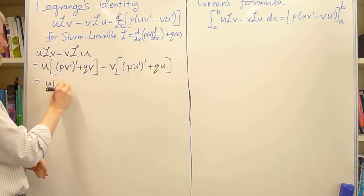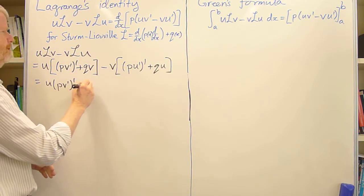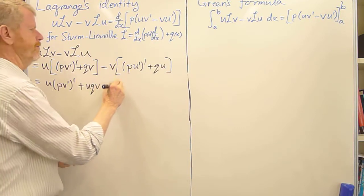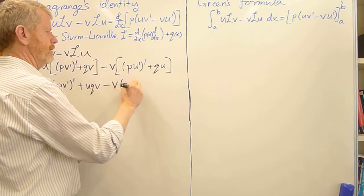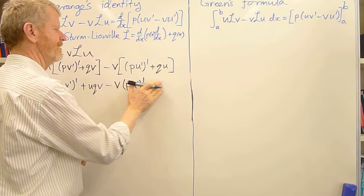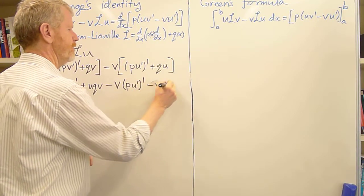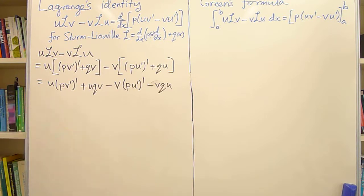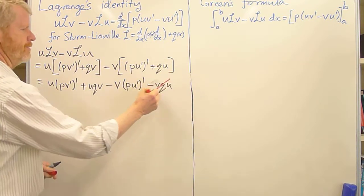upv'' plus uqv minus vpu'' plus minus vqu. And you can see there's one simplification that occurs straight away, which is that these two terms cancel.